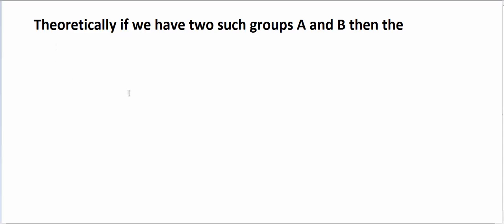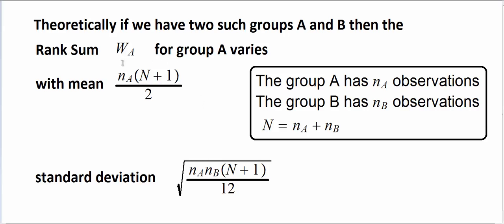So theoretically, if we have two such groups, then the rank sum W_A, that is the sum of the ranks of the values in group A, that will vary. So the mean for all the possible values of W_A will be this, where N_A is the number of observations in A, which in our example was 12. And N_B is the number of observations for group B and this big N is sum of these two. And N_A and N_B don't have to be equal. In this case, they did happen to be equal. So in this case, the mean is this value and the standard deviation is this value.